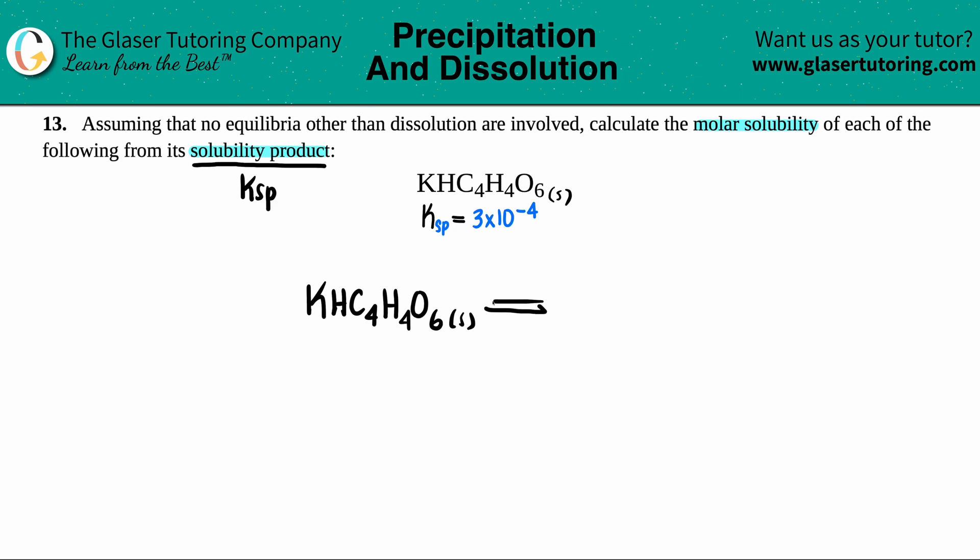And this will come to equilibrium because we're talking about K values. And we just have to know where the break is. Well, the break would be between the metal and then the non-metal acid. So it's between the K and then the rest of the other stuff. So we have K plus the HC4H4O6.